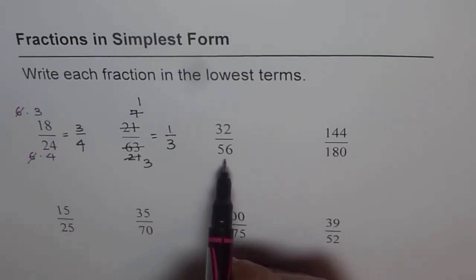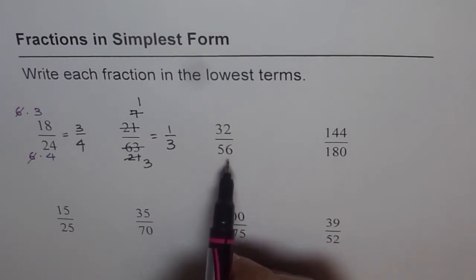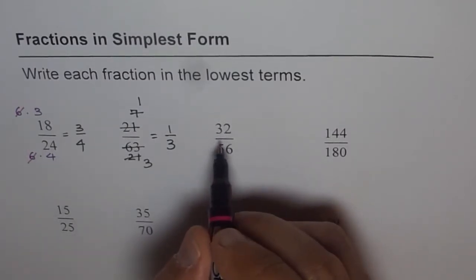8 times 4 is 32. And 8 times 7 is 56. So they can be divided by 8. It is normally good to divide by a bigger number, so that we can do the question in lesser number of steps.